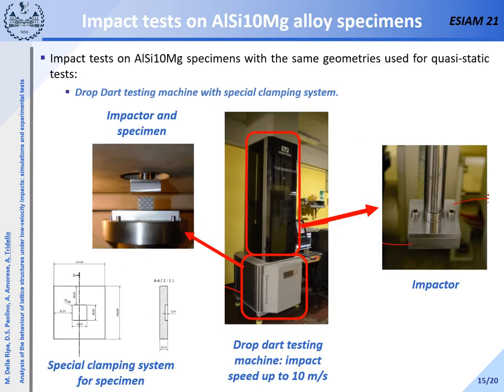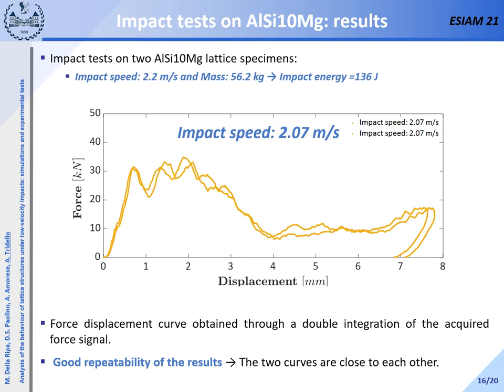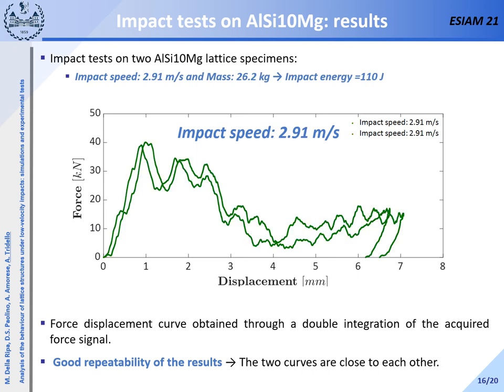Finally, impact tests on the same aluminum alloy specimens used for quasi-static compression tests were carried out. The drop dart testing machine used for the test is shown, with modifications to the clamping system designed for blocking the specimen and to the impactor. The impact tests carried out at about 2 m/s are reported, showing the force-displacement curves. The two curves are close to each other, showing good repeatability and proving the effectiveness of the manufacturing process.